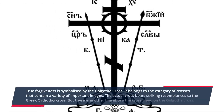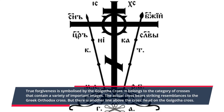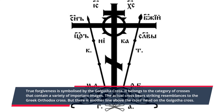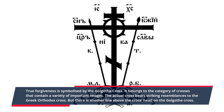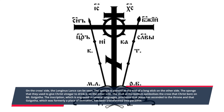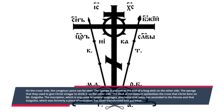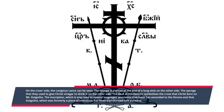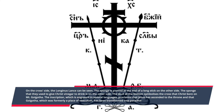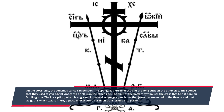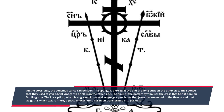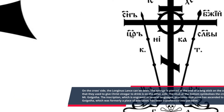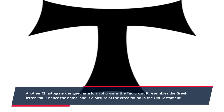Number ten: the Golgotha Cross. True forgiveness is symbolized by the Golgotha Cross, which belongs to the category of crosses containing a variety of important images. It bears resemblances to the Greek Orthodox Cross, but has an additional line above the cross head. On one side, the long lance of Longinus can be seen; on the other, a sponge pierced at the end of a long stick used to give Christ vinegar to drink. The skull at the bottom symbolizes the cross that Christ bore on Mount Golgotha, and an inscription proclaims that Golgotha, once a place of execution, has been transformed into paradise.